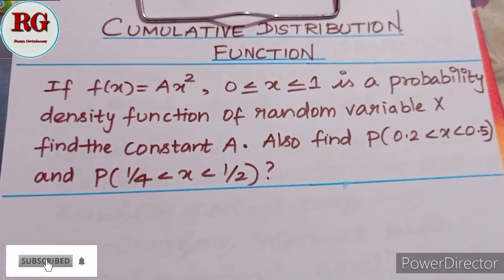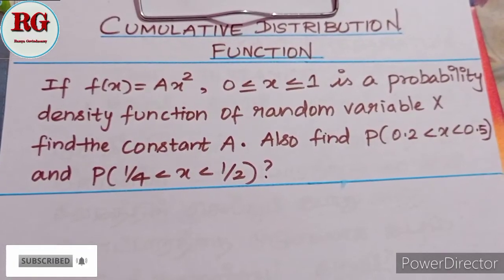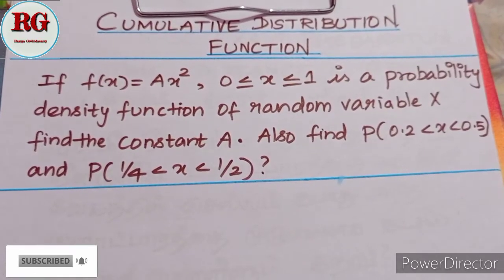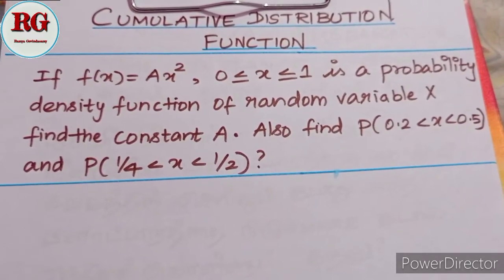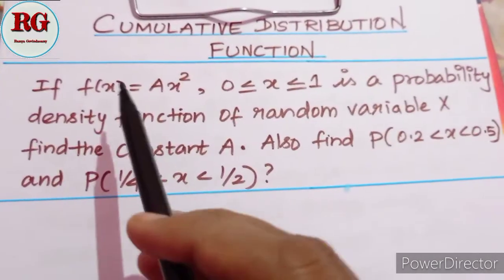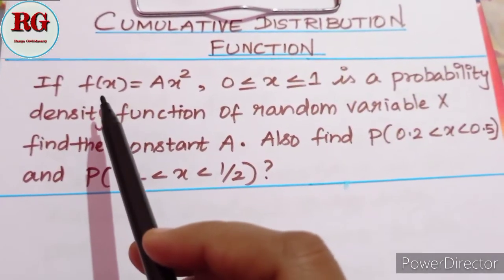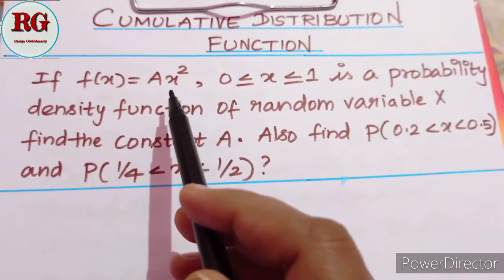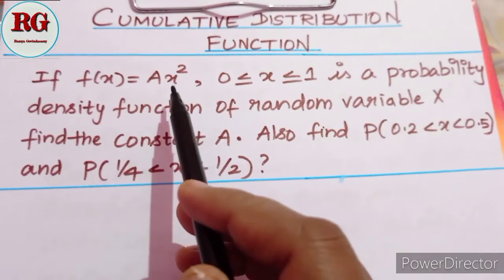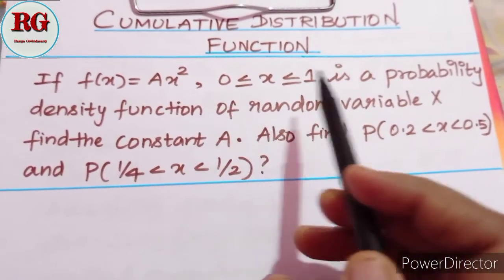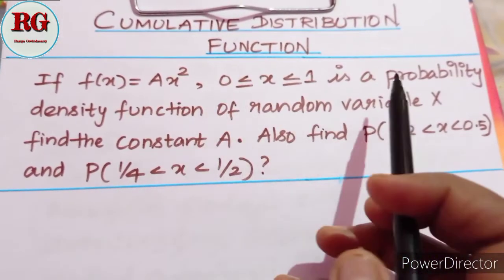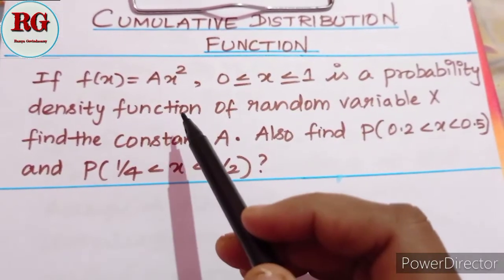Hello everyone. I am going to talk about the topic of cumulative distribution function. If you look at the function f of x equals A x², the range of this A x² is 0 to 1. This is a probability density function.